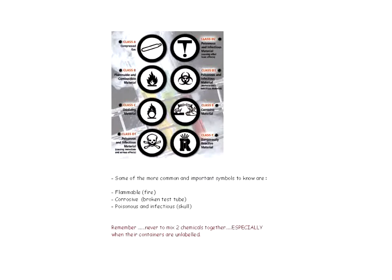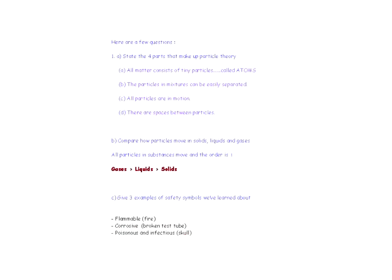Here is a diagram showing different safety symbols important to know when working in a lab. These are sometimes called MSDS symbols. Some of the important ones to know are the flammable symbol, which is fire; the corrosive symbol — corrosive means it can eat through skin; and the poisonous and infectious materials symbol, which is the skull. Remember, you never want to mix two chemicals together when you find them sitting there, especially if their containers are unlabeled and you don't know what they are — you could get an explosion.